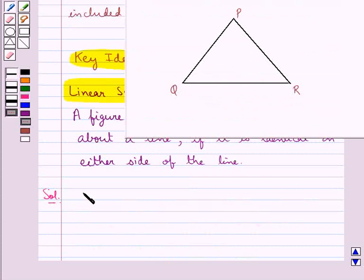Consider this isosceles triangle PQR with the side PQ equal to the side PR.